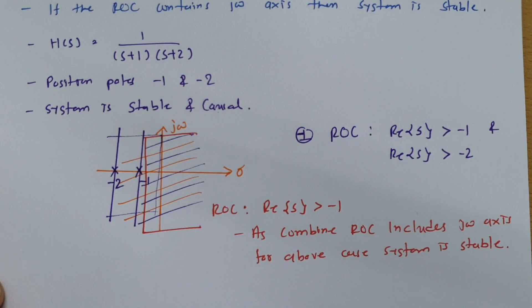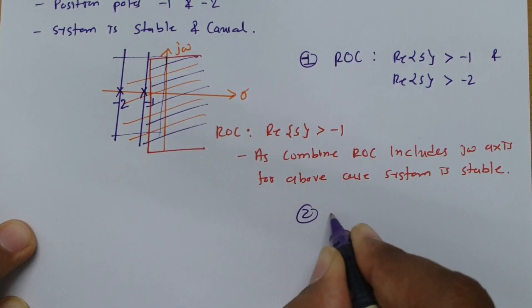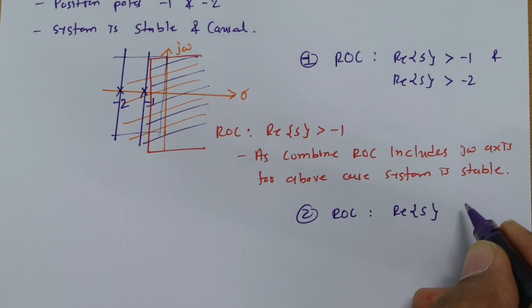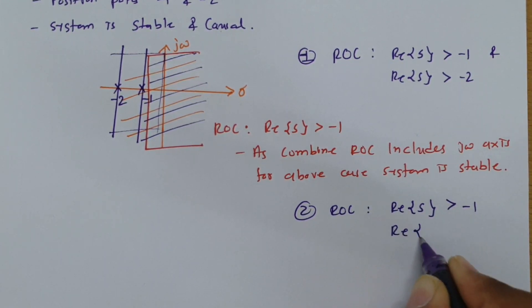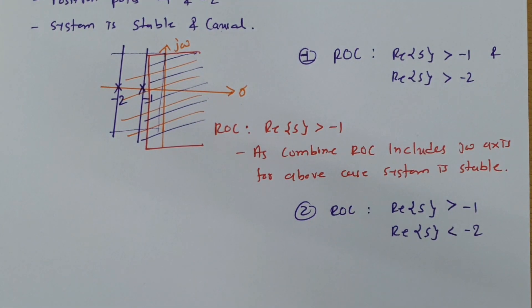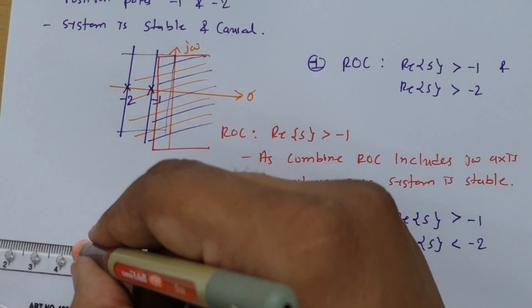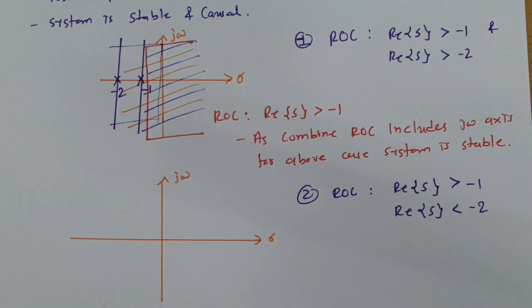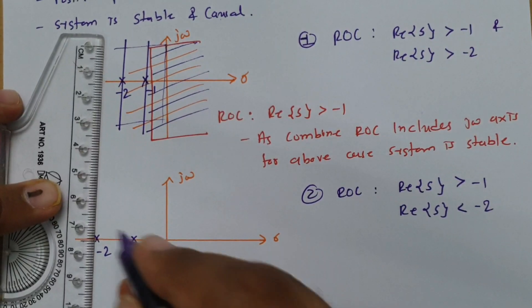Now I will consider Case 2 to give a little more clarity. In the same question, if the ROC is given as: real part of S greater than minus 1, and real part of S less than minus 2. Let us plot the ROC on the S-plane. Here sigma is the real axis and j-omega is the imaginary axis. Poles are at S equals minus 1 and S equals minus 2, so I draw vertical lines at those positions.